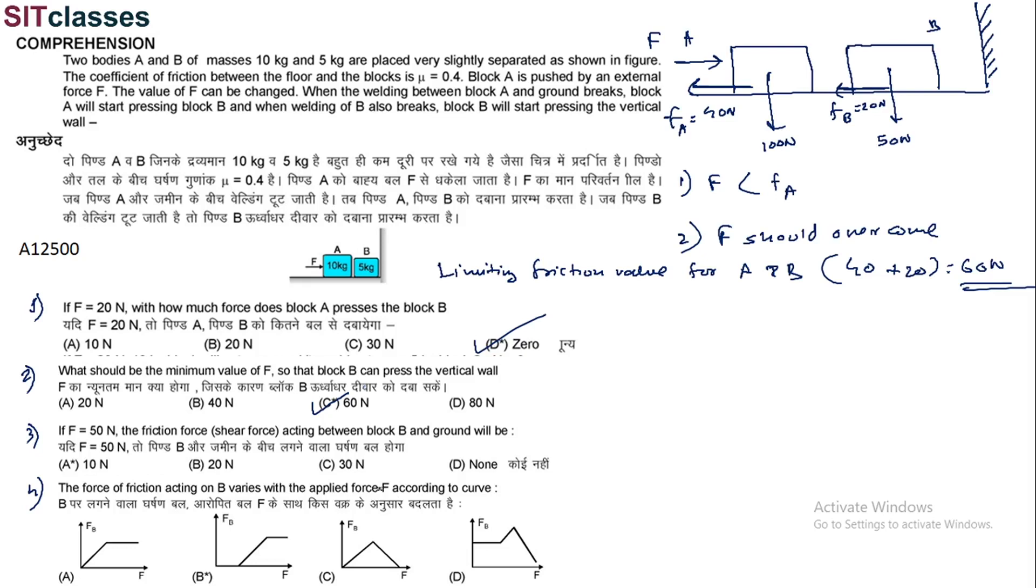If F is equal to 50 N, the friction force acting between block B and ground will be. So now you have to picture it.